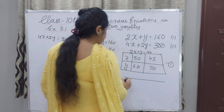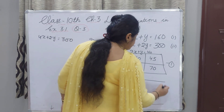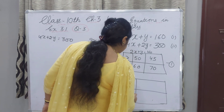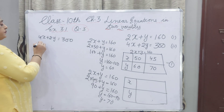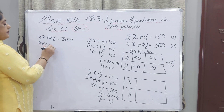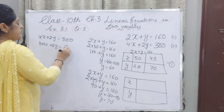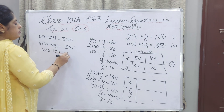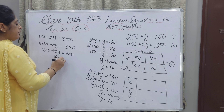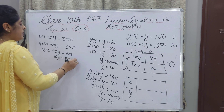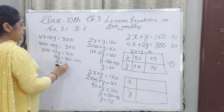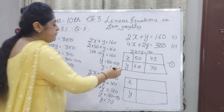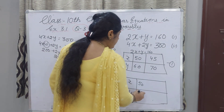Now make the second table for equation 2: 4X plus 2Y equals 300. I am taking X as 50. Then 4 multiplied by 50 plus 2Y equals 300, so 200 plus 2Y equals 300, giving 2Y equals 100 and Y equals 50. If X is 50 for equation 2, I am getting Y also as 50.